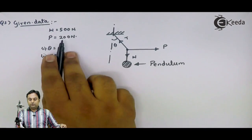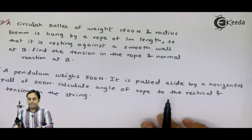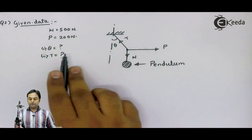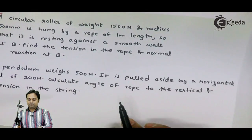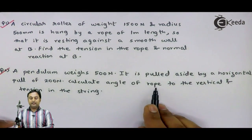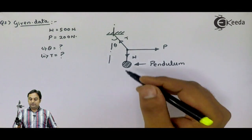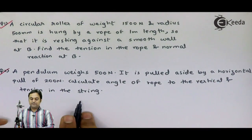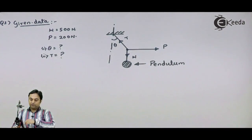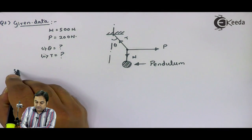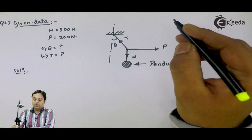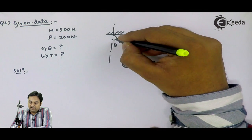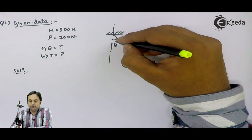A pendulum weighs 500 Newton. It is pulled by a horizontal force P equal to 200 Newton. We have to calculate the angle made by the rope with the vertical and the tension T. Before solving, we need to get the values of each and every angle. The angle made by the rope with the vertical is theta.